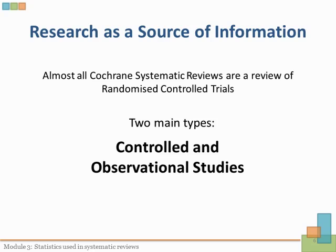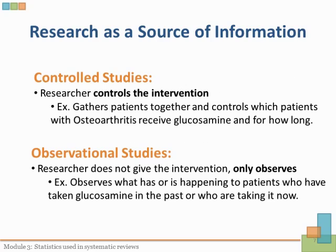But why do Cochrane reviews focus on randomized controlled trials? Basically, there are two types of studies: controlled and observational studies. Controlled studies are studies in which the researcher controls the intervention — for example, if a researcher wanted to know what happens when people with osteoarthritis take a nutrient supplement such as glucosamine, the researcher would gather a group of patients and control which patients received glucosamine therapy and for how long. In an observational study, the researcher would not give the treatment to patients, but simply observe what was happening in patients who had taken glucosamine in the past or who were presently taking it. There is no control over the intervention.